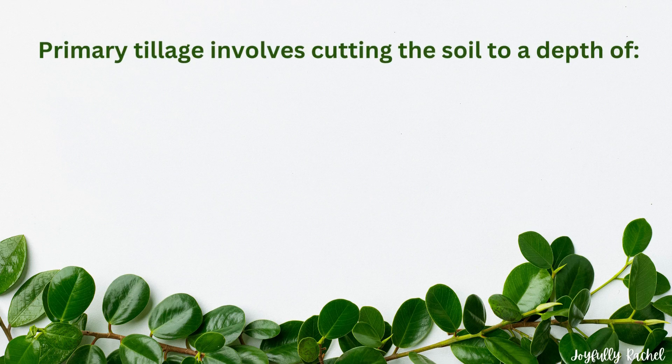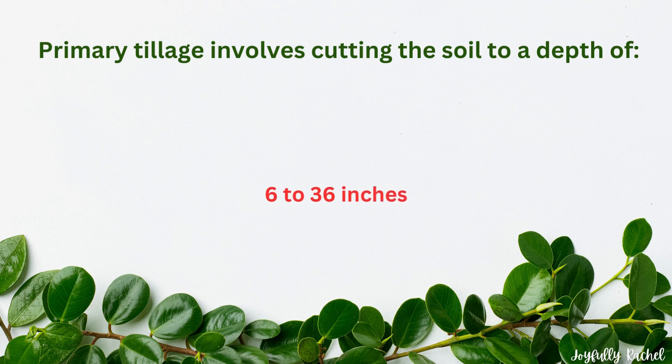Primary tillage involves cutting the soil to a depth of 6 to 36 inches.